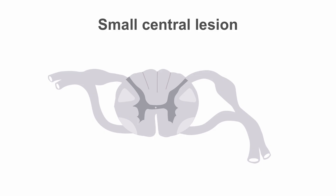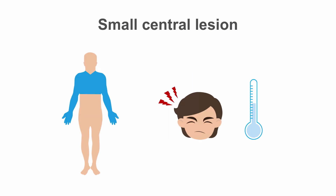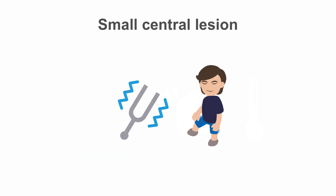There are a number of spinal cord syndromes which can occur in addition to the anterior and posterior artery syndromes discussed in the last lesson. Small central lesions might affect centrally crossing fibers of the spinothalamic tract. In these cases, there is loss of pain and temperature sensibility in affected dermatomes with preserved vibration and proprioception. This is known as dissociated sensory loss.